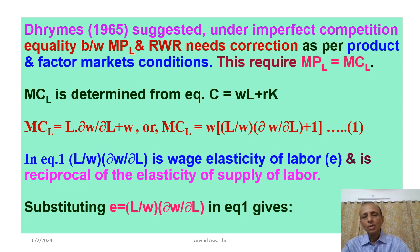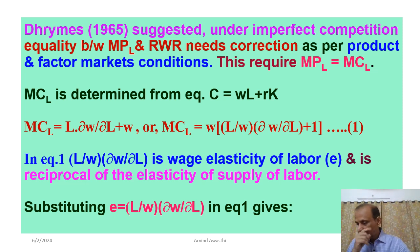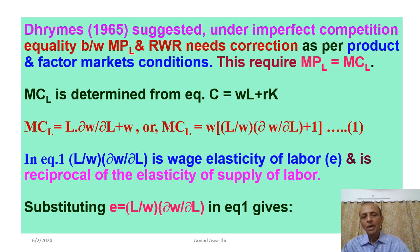MCL equal to: WL को UV का function माना है, तो product rule से second term L, delta W by delta L, plus W into delta L by delta L। delta L by delta L 1 के बराबर है। तो marginal cost of labor आया: L, delta W by delta L, plus W।